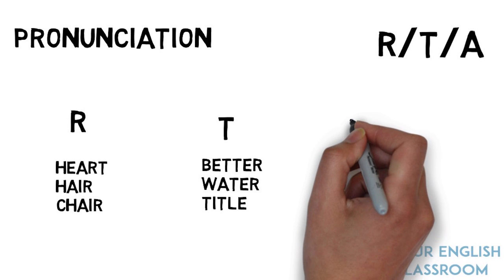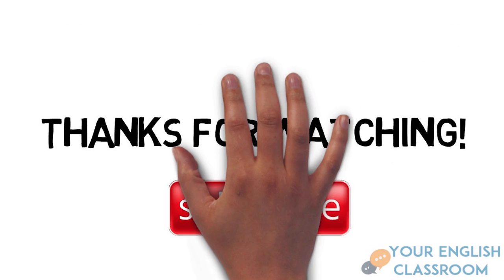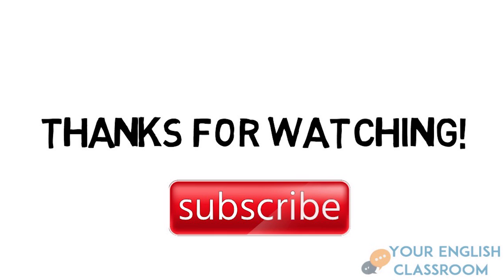In some words the letter A is pronounced differently in British and American English and varies from word to word. For example: 'glass', 'grass', 'ask'. British people say 'grass', 'glass', and 'ask'. This happens because American people open their mouths more and British people don't. Thanks for watching — don't forget to leave a comment down below and tell me what your favourite British and American words are.